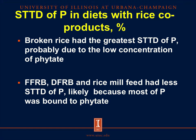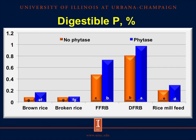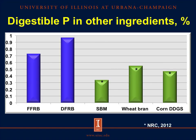In contrast, brown rice, full-fat rice bran, defatted rice bran, and rice mill feed, which contain different proportions of the aleurone layer where phytate is stored, had greater concentration of phytate, and in consequence, had low digestibility of phosphorus. However, even with the high digestibility of phosphorus in broken rice, the percentage of digestible phosphorus is greater in full-fat rice bran and defatted rice bran because of the greater concentration of phosphorus, and these amounts also increased when phytase is added. If we compare the percentage of digestible phosphorus for full-fat rice bran and defatted rice bran with other ingredients used in pig diets like soybean meal, wheat bran, or corn DDGS, we can see that these rice coproducts provide more digestible phosphorus than those ingredients.